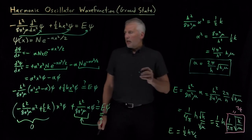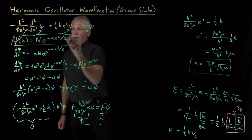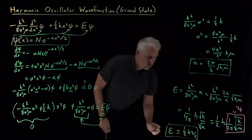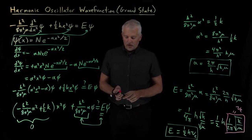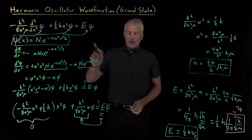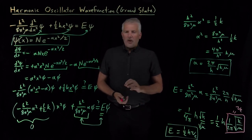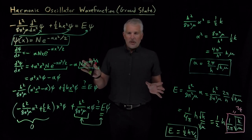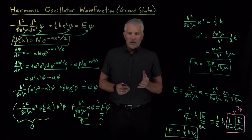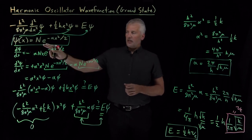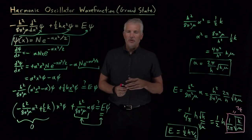So that combination of this wave function, this constant alpha, and this energy together compose a solution for the harmonic oscillator. This wave function solves the harmonic oscillator Schrödinger equation with this particular energy. You may already be wondering — is this the only solution, or are there more, like other quantum mechanical problems? There are indeed more than one solution; this is one solution, but there's a whole family of somewhat similar solutions. The next step will be to explore what those other solutions look like.